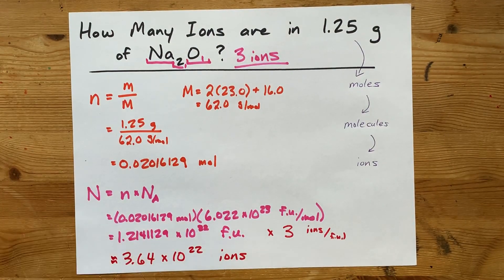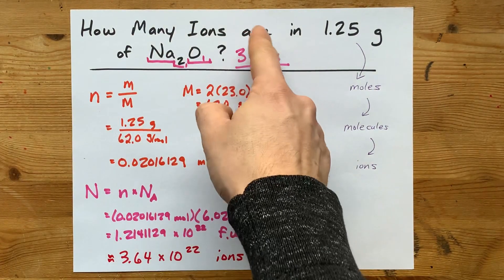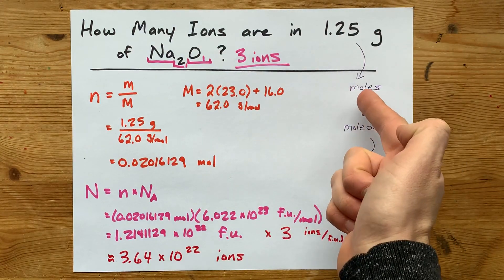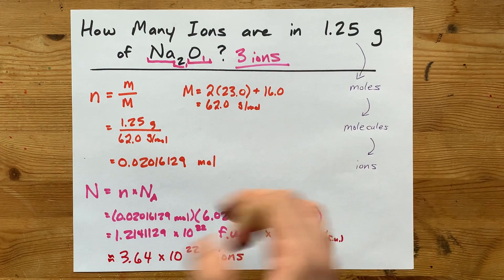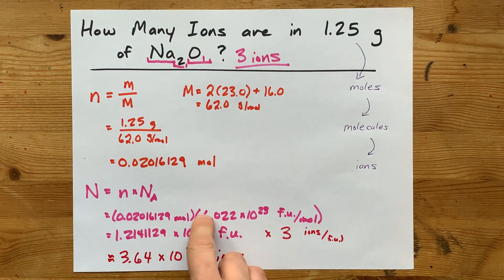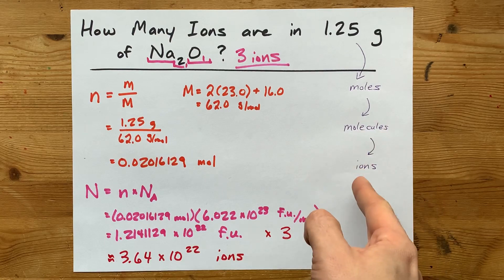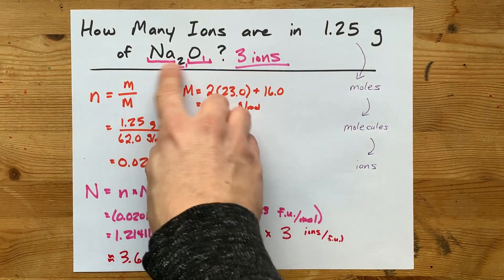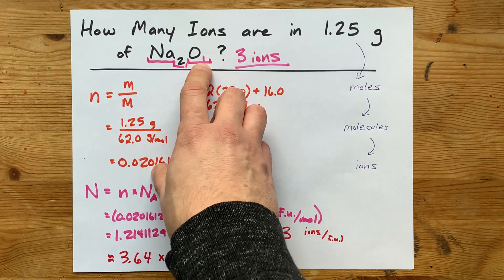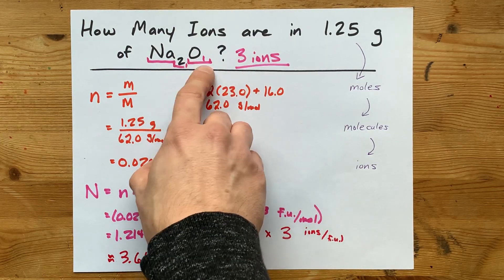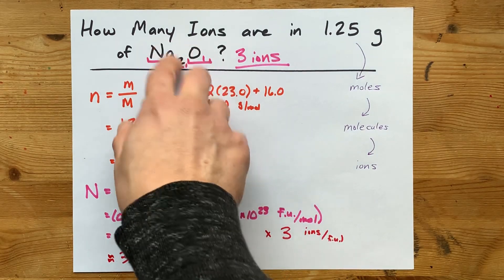So, if you're asked for how many ions are in a sample, you've got to convert it to moles by dividing by molar mass, convert it to molecules by multiplying by Avogadro's number, and then you also multiply by however many ions are in each of the formula units you're given. It may not be three. It depends on the formula itself. You're adding up the subscripts on the ions.